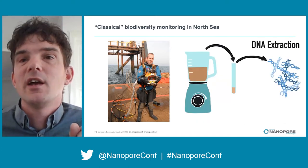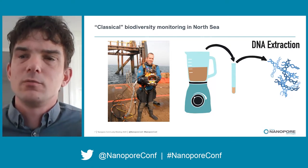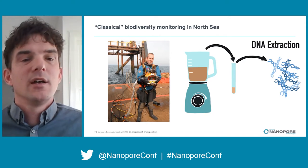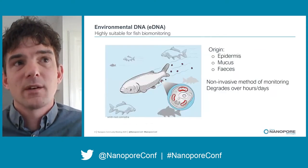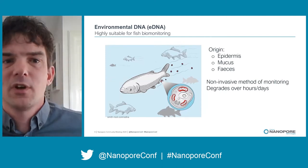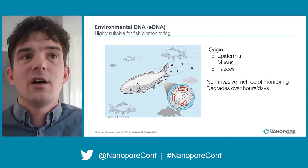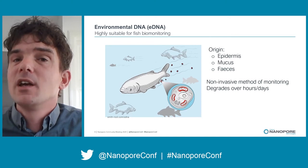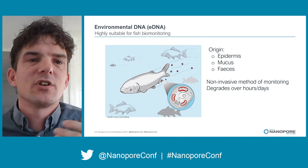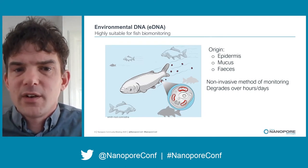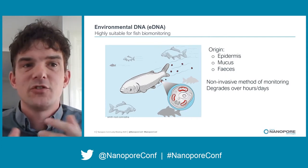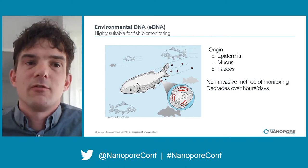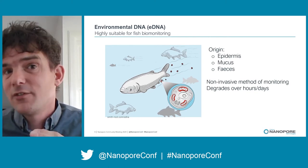What you can do is replace the taxonomist with a blender and some DNA extraction work — sequence the DNA from all the samples to get a picture of biodiversity. The diver can also be replaced by using environmental DNA. For larger animals like fish, eDNA is a really suitable biomonitoring method: the DNA is present in the water column, originating from the skin, mucus, or feces of the animals. It's a non-invasive method that also allows temporal analysis, since DNA degrades within a few hours or days of release.